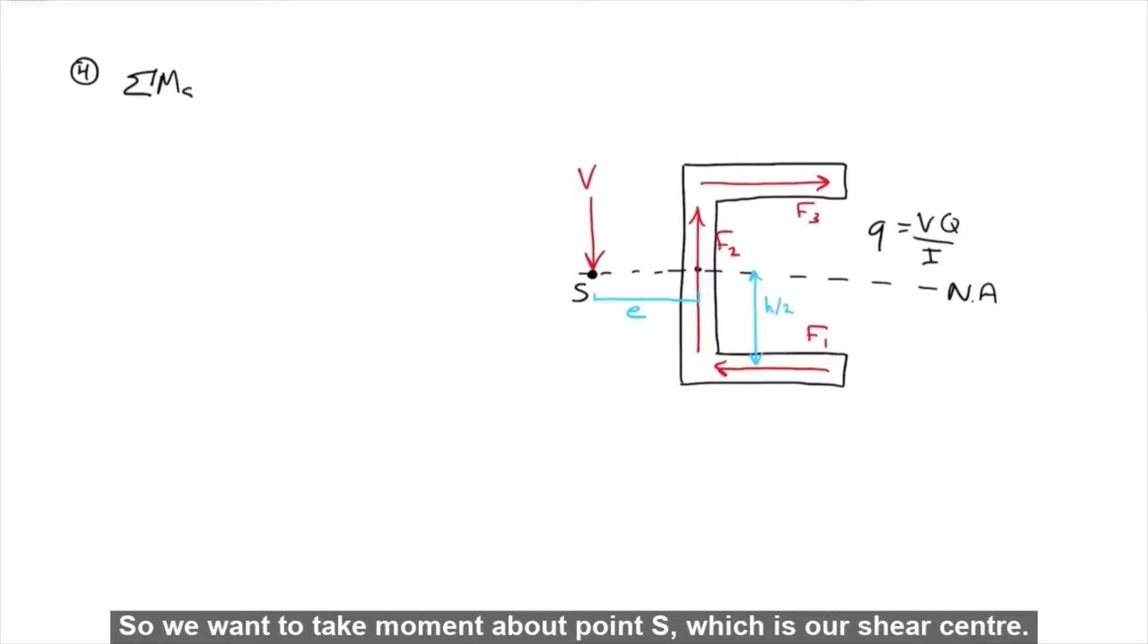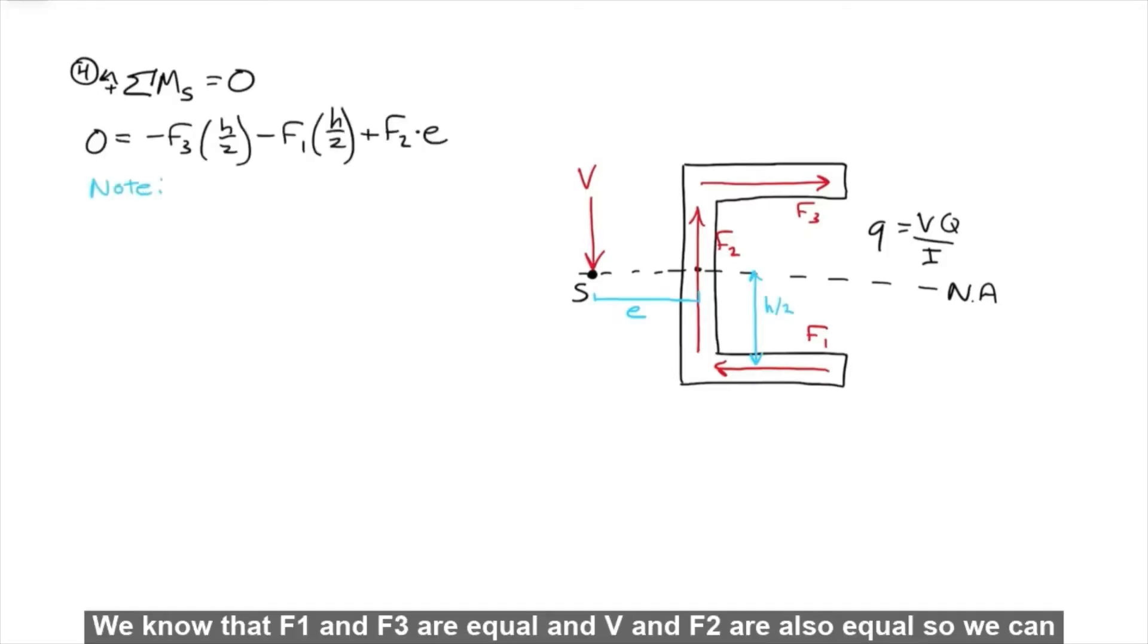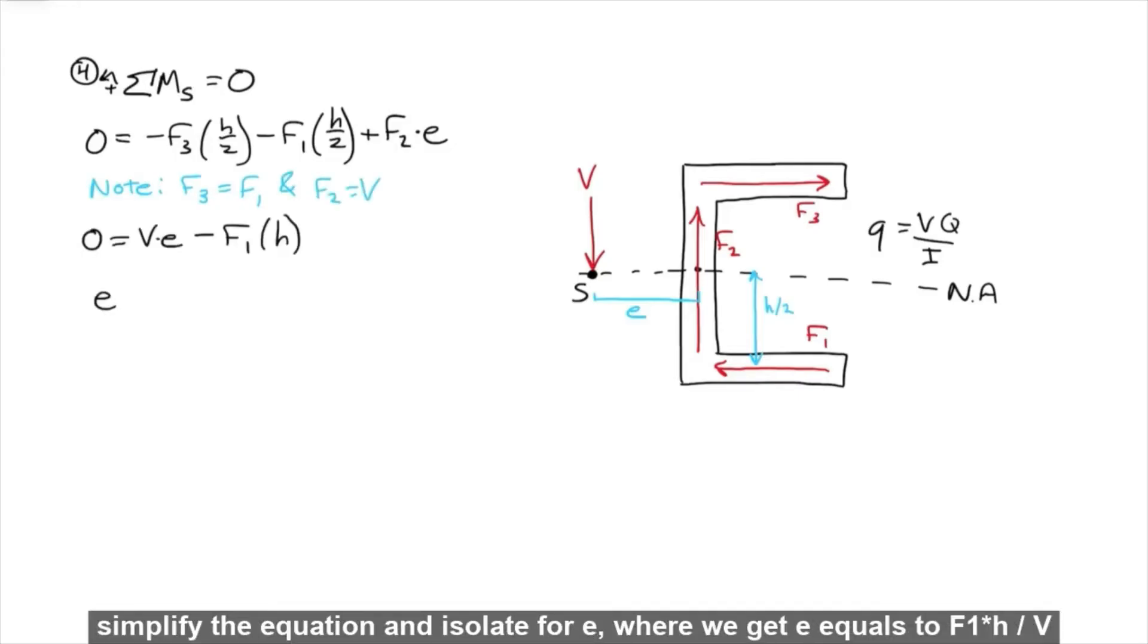So we want to take moment about point S, which is our shear center. We will assume counterclockwise to be positive. So when we write out our moment equation, we get this. We know that F1 and F3 are equal, and V and V2 are also equal. So we can simplify the equation and isolate for E, where we get E equals to F1 times H over V.